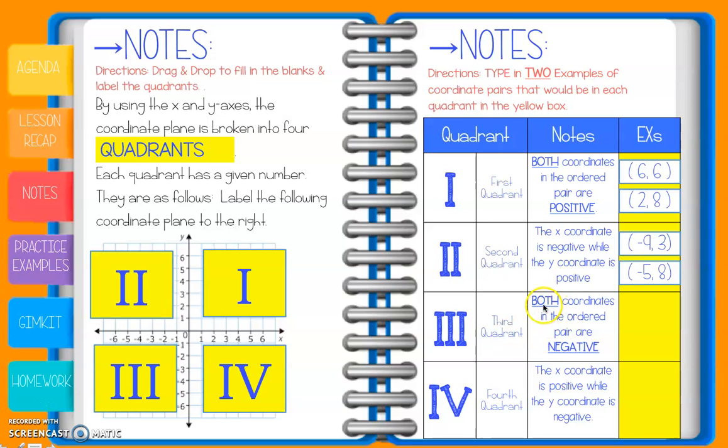The third quadrant is where both coordinates in the ordered pair are negative. Both X and Y are negative. We have (-3, -5). If we graph it, (-3, -5) falls down here in the third quadrant. Another example is (-9, -1). Both coordinates are negative.